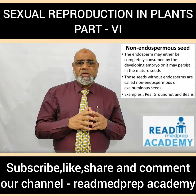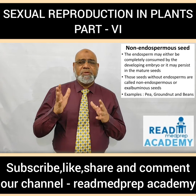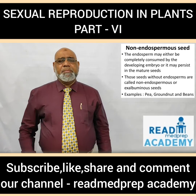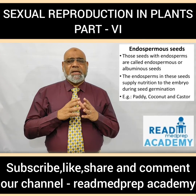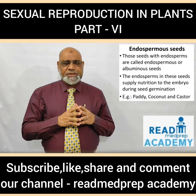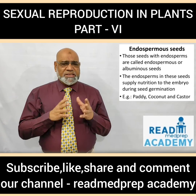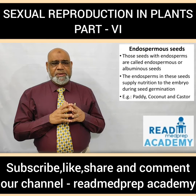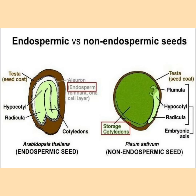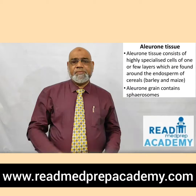The endosperm may either be completely consumed by the developing embryo or persist in the mature seed. Seeds without endosperm are called non-endospermic or ex-albuminous seeds — examples include pea, groundnut, and beans. Endospermic seeds contain endosperm and are also called albuminous seeds; the endosperm supplies nutrition to the growing embryo during seed germination — examples include paddy, coconut, and castor. In the image you can see the endospermic seed with endosperm below the aleurone layer surrounding the embryo, and the non-endospermic seed where food is stored only in the cotyledons.